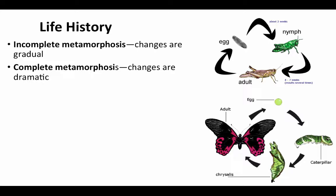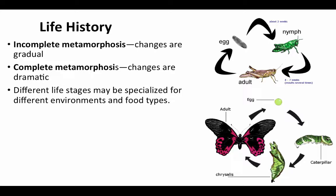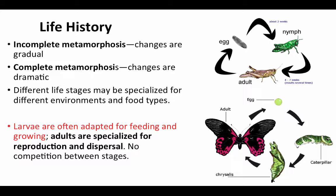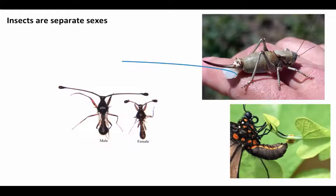Or insects can undergo complete metamorphosis — the familiar idea of a caterpillar making a cocoon, going into a chrysalis, and totally reorganizing its body so that different life stages are specialized for different environments and food types. The caterpillar is primarily adapted for feeding and growing, gaining body tissue. The adult is then specialized for reproduction and dispersal, growing large wings to disperse away from the parental population. There is no competition between stages because the adult and juvenile occupy completely different ecological niches.